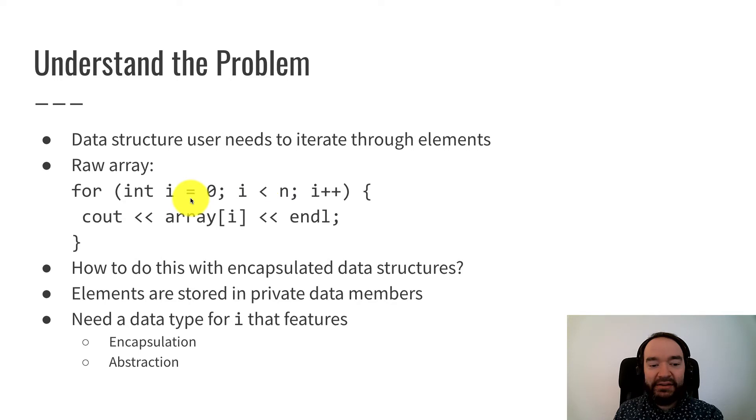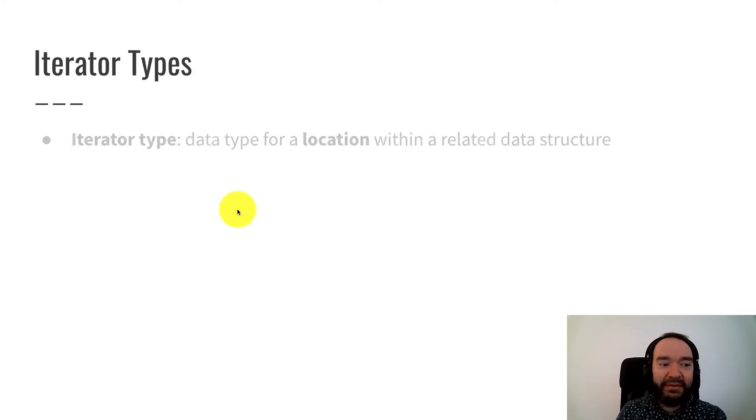As we'll see, there's very different ways of visiting the elements of a data structure. A partially filled array works one way. A vector works a different way. A singly linked list works one way. A doubly linked list works a different way. There's all sorts of different ways of iterating through the elements. But as a user, I don't want to have to know about that. That's the idea of abstraction. I just want to be able to write a loop and not have to think about those things.